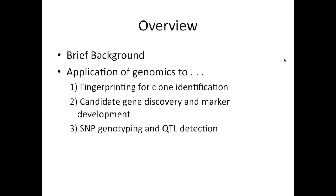Today I'm going to give you a brief background and then give my talk in three main sections. I'm going to talk about the application of genomics to fingerprinting for clone identification, the application of genomics to candidate gene discovery and marker development, and application of genomics to SNP genotyping and QTL detection. These three main sections also relate to the main uses of markers in breeding: fingerprinting for IP protection and nursery stock issues, and developing markers for marker-assisted seedling or parent selection.